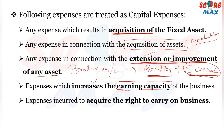The next category is expenditure incurred to acquire the right to carry on business. Our preliminary expenses, which we incur when we start the business, are called capital expenditure. Likewise, if we need a patent to start our business, the cost of the patent will also be our capital expenditure.